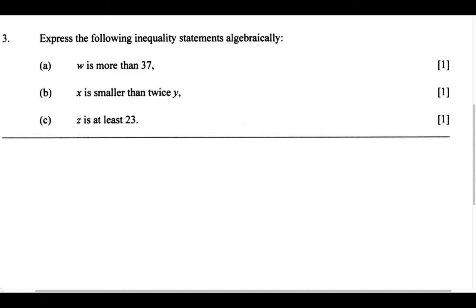Before we begin, I'm going to write out the five inequality symbols we might use. The first one is the greater than symbol. The second one is less than. The third one is equal to. The fourth one is less than or equal to. And the final one is greater than or equal to.